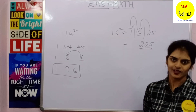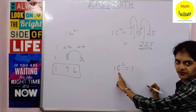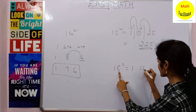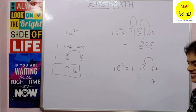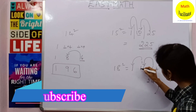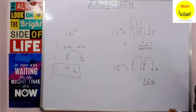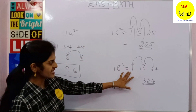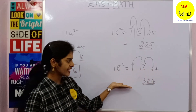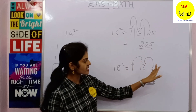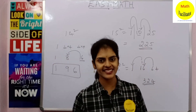Let us take another example: 18². Write 1 first, then 8 + 8 = 16, then 8 × 8 = 64. Now balance: write 4, add the carried 6 to 6 giving 12, then 1 + 1 = 2, and add that 2 to 1 giving 3. So 18² = 324. By practice it is very easy — you write 1, add the units digit, multiply the units digit, then balance by carrying the extra digit to the next position.